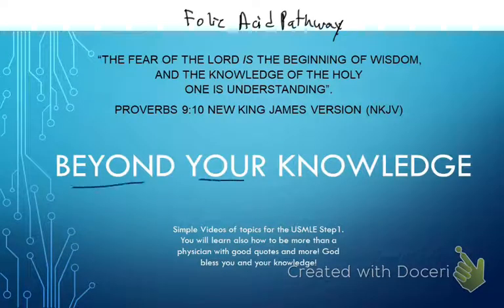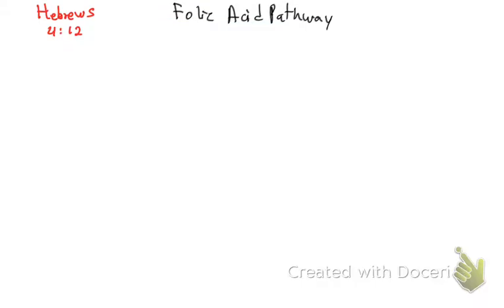Hi everyone, welcome to Beyond Your Knowledge. Today we are going to be reviewing the folic acid pathway. Before we continue, I would like to share Hebrews 4:12, which says: 'The word of God is living and active, sharper than any two-edged sword, piercing to the division of soul and spirit, of joints and marrow, discerning the thoughts and intentions of the heart.' Amen. So, it was 4:12. Folic acid pathway — let's continue, in Jesus's name.